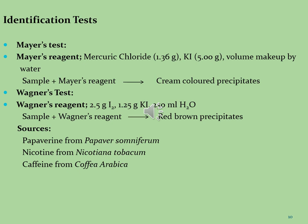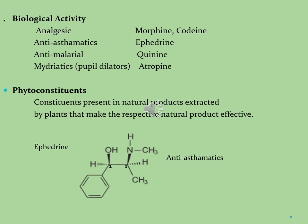Alkaloid molecules are isolated from different plant species. For example, papaverine is isolated from Papaver somniferum, nicotine from Nicotiana tabacum, and caffeine is isolated from Coffea arabica. Alkaloid molecules have different pharmaceutical and biological activities, including morphine and codeine with analgesic activities, ephedrine with anti-asthmatic activities, quinine used as an antimalarial drug, and atropine used as a mydriatic drug. Different kinds of phytoconstituents are present within different plant species.